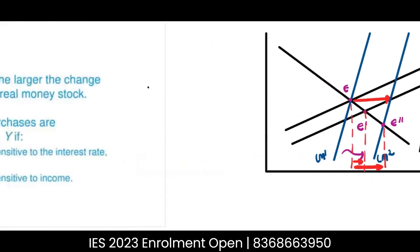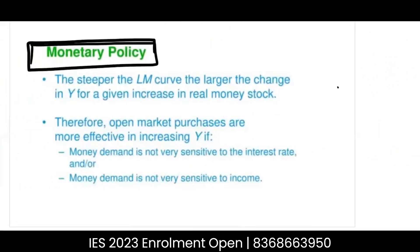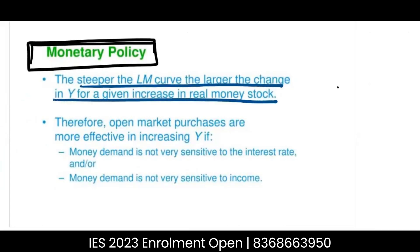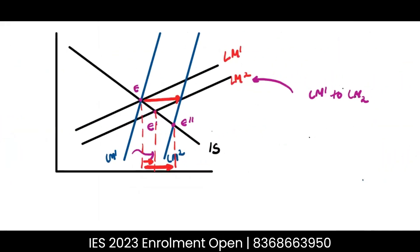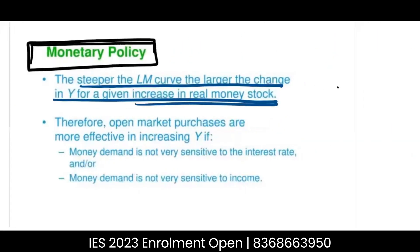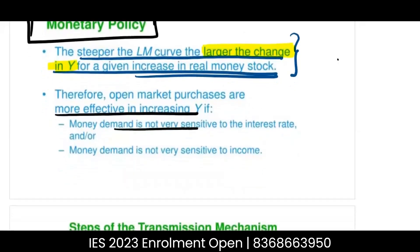The steeper the LM curve, the larger the change in equilibrium income. The steeper the LM curve, the larger the change in Y for any given increase in the stock of money. The increase in the stock of money is the same, and the rightward shift of the LM curve is also the same in both cases, but the corresponding change in Y differs. Therefore, open market purchases are more effective in increasing Y.